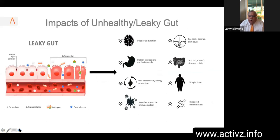Leaky gut syndrome — on the left side of the screen the epithelial cells are healthy and pink. On the right side they're bright red, indicating they're inflamed. There are gaps between them, and those gaps are where bad things start to happen. A variety of food particles, bacteria, and other unwanted items are being introduced into the bloodstream, going upstream to cause additional problems throughout the body.